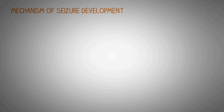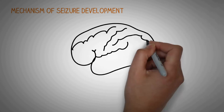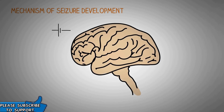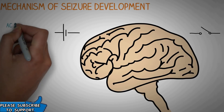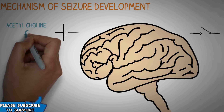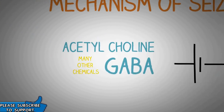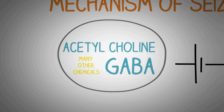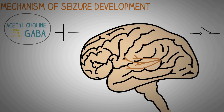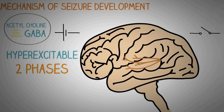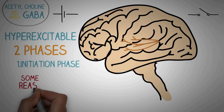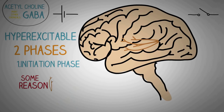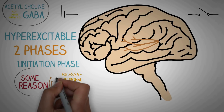Now let's talk about the mechanism of seizure development. Normally, there exists a balance between the excitation and inhibition of neurons in the central nervous system, including the brain and all the neuronal pathways. This is maintained by chemicals like acetylcholine and GABA. Seizures develop when a group of neurons in the brain becomes hyperexcitable. This usually happens in two phases. The first phase is called the initiation phase, in which some neurons become hyperexcited and start to have excessive neuronal discharges.